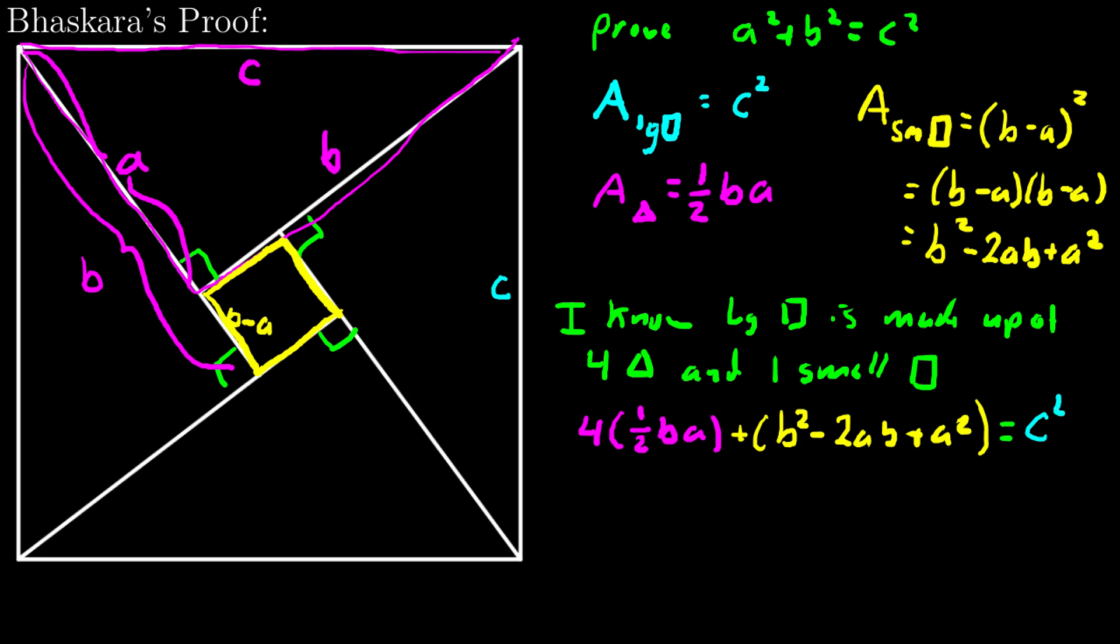And now with a little bit of algebra, four times one half is 2ba. I'll bring everything down here. b squared minus 2ab plus a squared equals c squared.